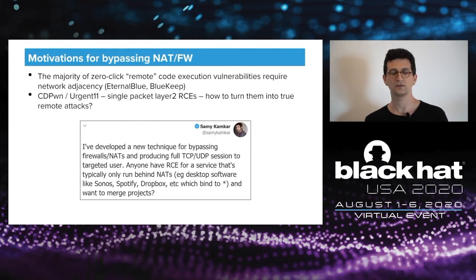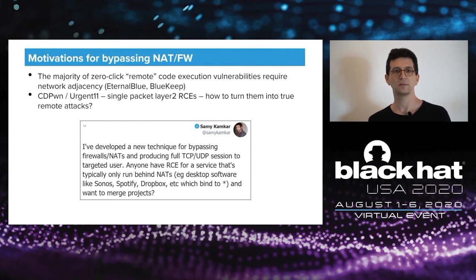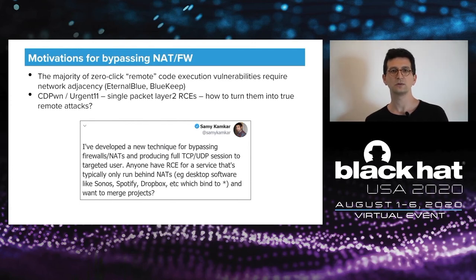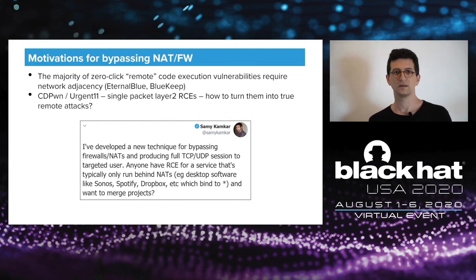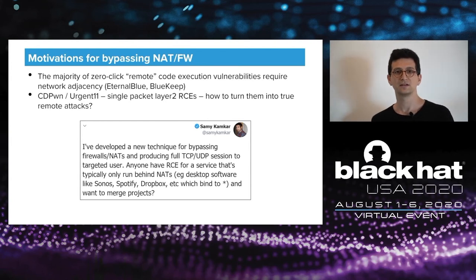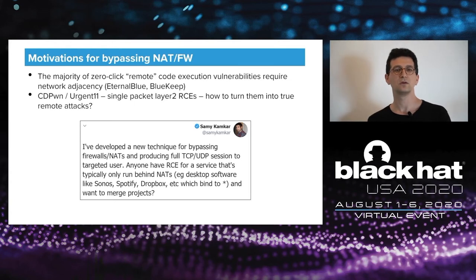Before we dive into the actual findings of our new research, let's begin with the motivation that led us to it. As many of you probably know, the majority of zero-click remote code execution vulnerabilities require attackers some form of network adjacency to the victim device — either direct IP routing or even Layer 2 access. This includes RCEs we've discovered ourselves such as Urgent11 and CDPWN, but also well-known RCEs like BlueKeep and EternalBlue.